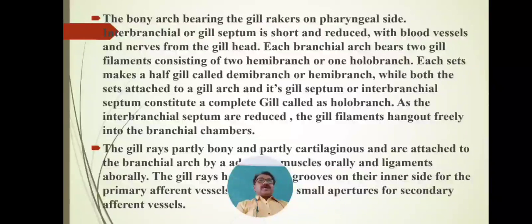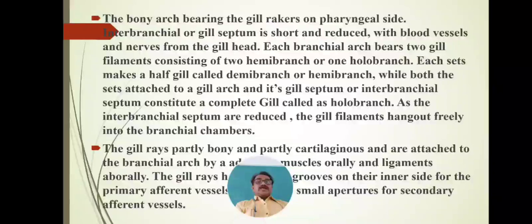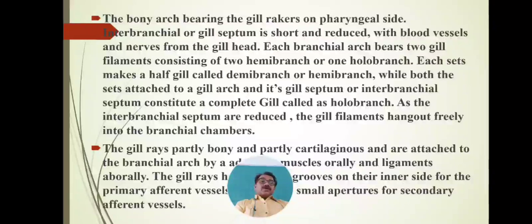In Wallago attu, the interbranial septum is reduced and short, and due to this, the gill filaments hang out freely inside the branchial or gill chamber. These gill filaments take an active part in gaseous exchange. Carbon dioxide diffuses from the blood, and dissolved oxygen present in the water is absorbed by the gill lamella or gill filaments.